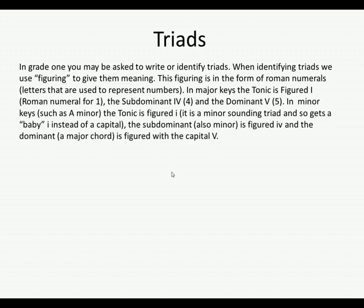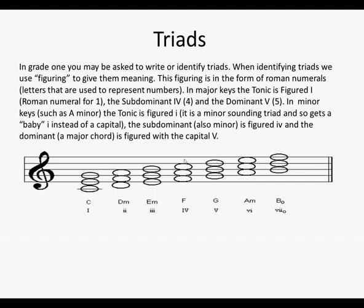In minor keys, such as A minor, the tonic is figured with a lowercase i because it is a minor-sounding triad. The subdominant, which also sounds minor, is figured lowercase iv. The dominant, which is a major-sounding chord, is figured with a capital V. You can see here this is in a major key, so it's figured with capital I, capital IV, and capital V.